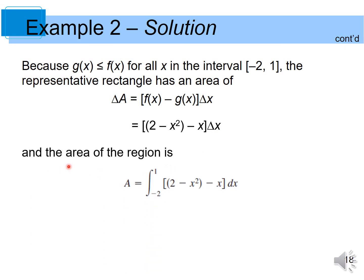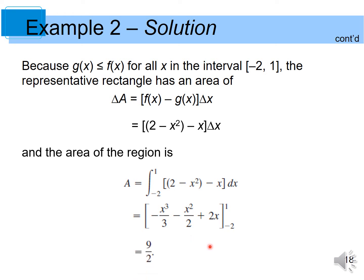The area of the region is found by evaluating the integral. We simplify the integrand first, then apply the power rule. The area of the region is 9 over 2.